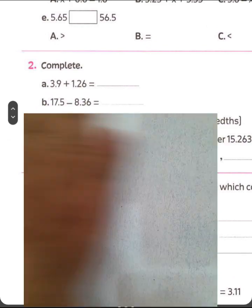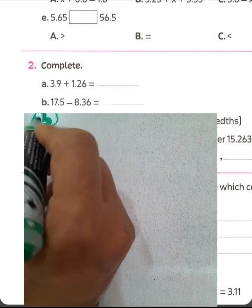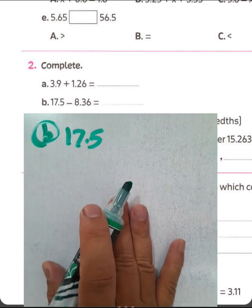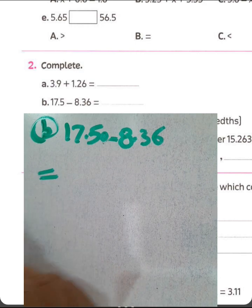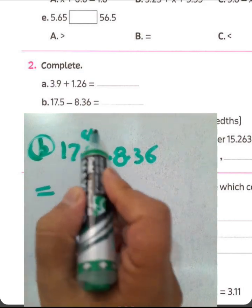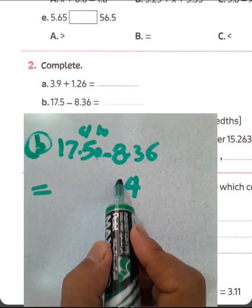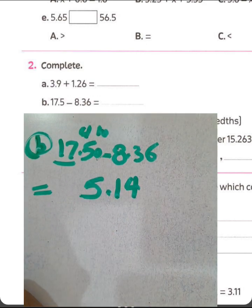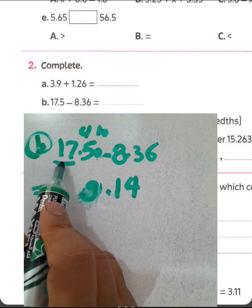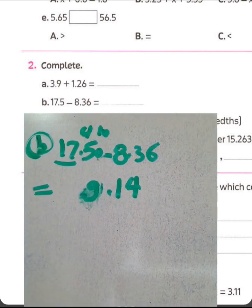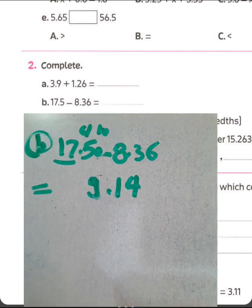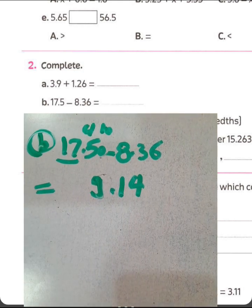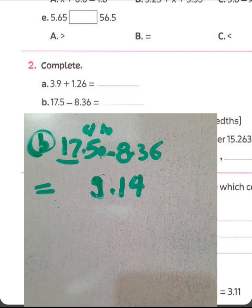Letter B. 17.5 subtract by 8.36. You can put zero behind it to find the difference. 0 minus 6, we can't do it. Borrow 1 from 5, it will be 4. And 0 will be 10. 10 minus 6 equals 4. 4 minus 3 equals 1. 17 minus 8 equals 9. Okay. It's 17, not 15. 17 minus 8 equals 9. The result will be 9.14.